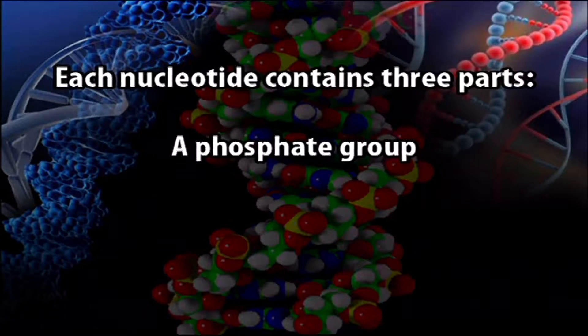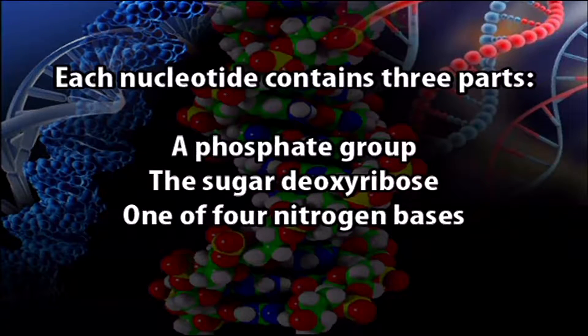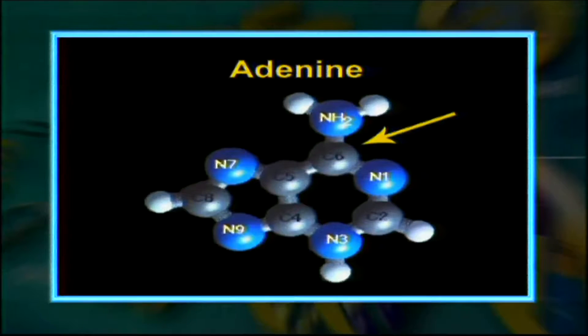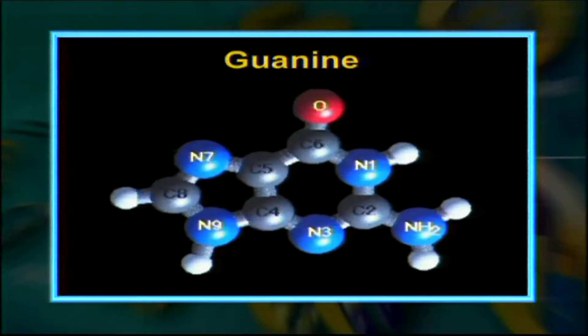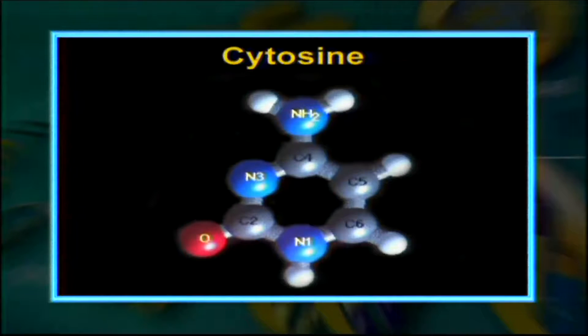DNA is basically composed of nucleotides, and each nucleotide contains three parts: a phosphate group, a deoxyribose sugar, and one of the four nitrogen bases. The four bases of DNA in their triphosphate forms include adenine (dATP), guanine (dGTP), thymine (dTTP), and cytosine (dCTP).